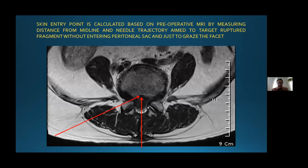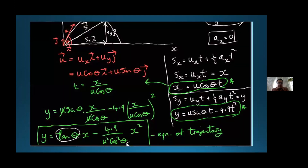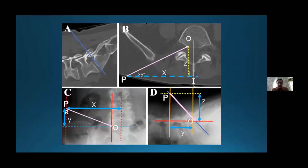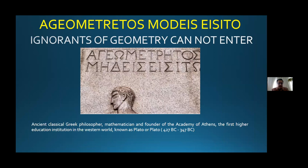Sometimes these calculations are very difficult for difficult patients — scoliosis, arthrosis, malposition of the patient. We need many, many calculations and we need good preoperative planning. As Plato said, we need to know geometry and mathematics for preoperative planning.